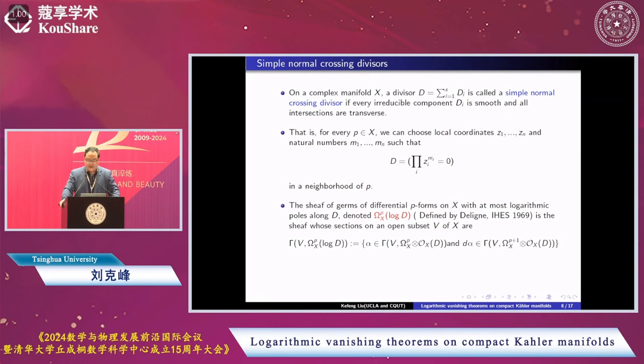That means each divisor is like a coordinate hyperplane. The sheaf of germs of differential P-forms on X, which at most logarithmic poles along D, is denoted by omega^P(log D). This was introduced by Deligne in 1969.